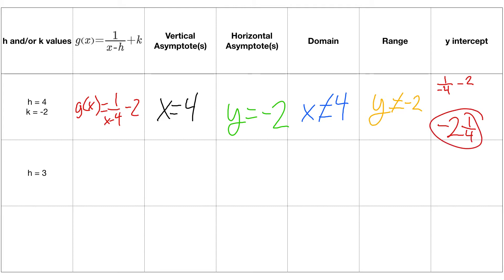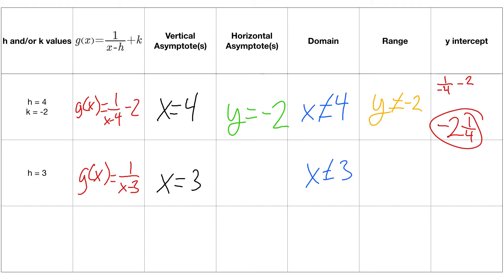For h equals 3 and no k: g of x equals 1 over x minus 3. The vertical asymptote is x equals 3, so the domain is x does not equal 3. Since there's no k, the horizontal asymptote is y equals 0, and the range is y does not equal 0. To find the y-intercept, plug in 0: I get negative one-third.